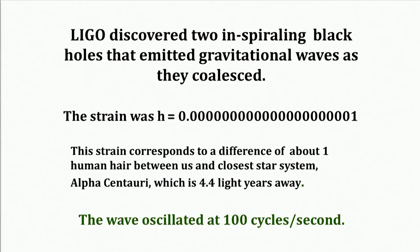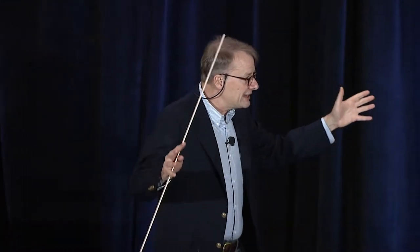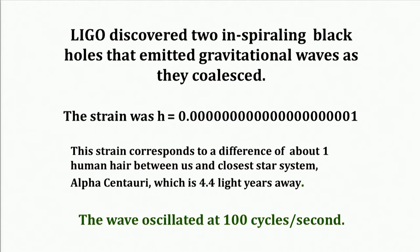We quantify that using H. What LIGO discovered two years ago was two inspiraling black holes. Those inspiraling black holes produce gravitational waves, and the strain they produced was 10 to the minus 21 — that corresponds to a difference of about one human hair between us and the nearest star system, Alpha Centauri. Tiny. It's a testament to how incredible LIGO is as an instrument. And the waves that led to that oscillated about 100 times a second.